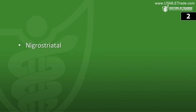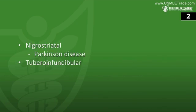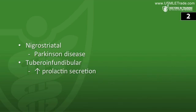If you block the nigrostriatal pathway, it results in Parkinson disease, and stimulation of this pathway can result in extrapyramidal side effects. If you block the tuberoinfundibular pathway, you will increase prolactin secretion from the anterior pituitary. This elevated prolactin causes hypogonadism, which manifests as amenorrhea in women and decreased libido in men, and rarely can cause gynecomastia and galactorrhea.